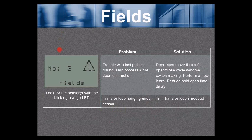Fields error. Again, look for the sensor or sensors with the blinking orange LED. The first number one problem for the fields error is trouble with lost pulses during the learn process while the door is in motion. The solution? The door must, must move through a full open and closed cycle with the home switch making.